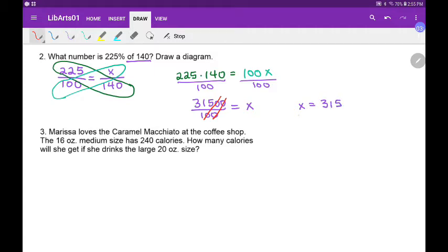So 315. And I look over here and I say, Does that make sense to be on top of 140? Well, it's more than 140, just like 225 is more than 100. It's more than twice. Two times 140 would be 280. So that's more than twice, a little bit more. So that seems good.